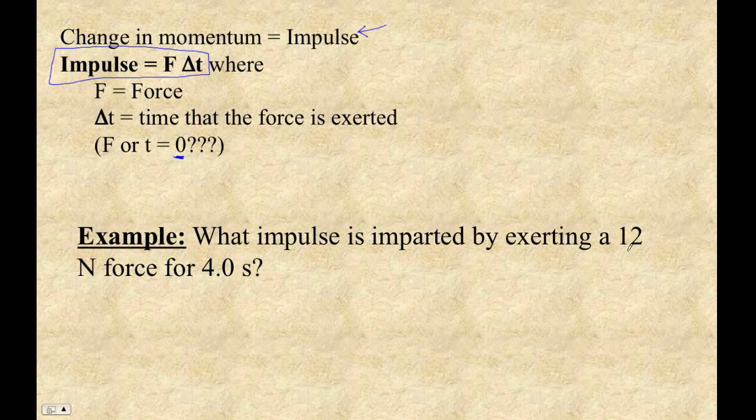If you exert 12 newtons for four seconds, your impulse - and we don't have any other symbol for it - is force times time. So that's like elapsed time. So that equals force is 12 newtons and 4.0 seconds.